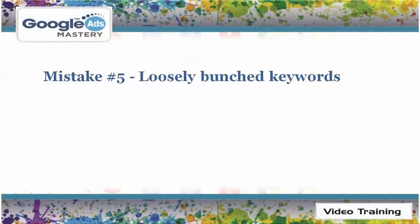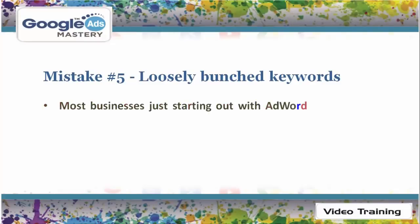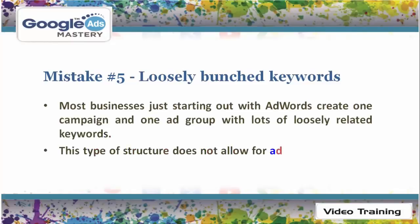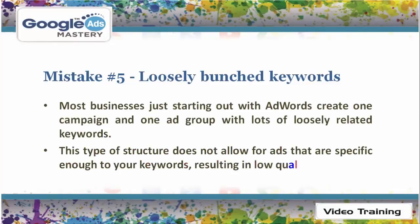Mistake number 5: Loosely bunched keywords. Most businesses just starting out with AdWords create one campaign and one ad group with lots of loosely related keywords. This type of structure does not allow for ads that are specific enough to your keywords, resulting in low quality scores.